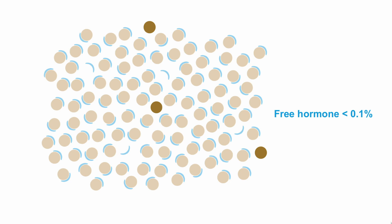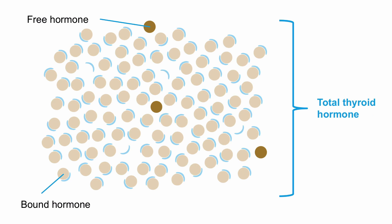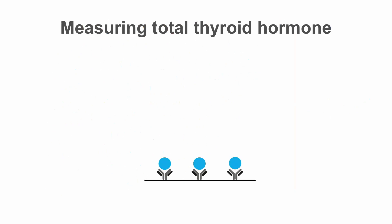Most of the thyroid hormone present in circulation is bound to protein. Less than one-tenth of one percent of circulating thyroid hormone is free or active. When we measure total thyroid hormone, we're measuring both the bound thyroid hormone as well as the free thyroid hormone.